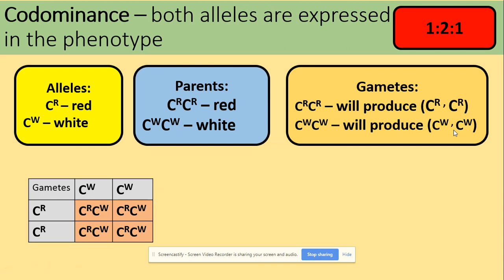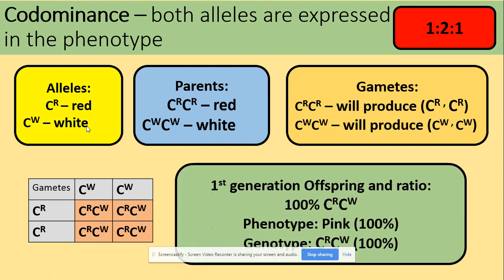We put those in a Punnett square and work out the genotypes of the offspring. In this situation, 100% of our offspring will carry one of each allele. According to what codominance says, both alleles will be expressed in the phenotype, so the red and white flowers are going to give us pink flowers. In the first generation we get 100% pink flowers with genotype C^R C^W.